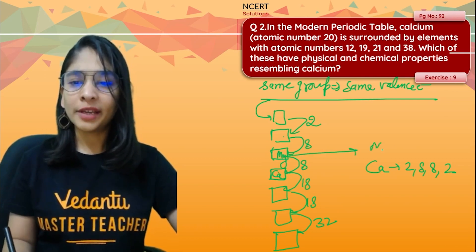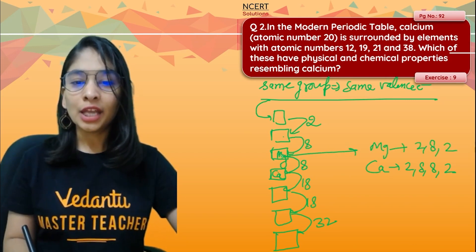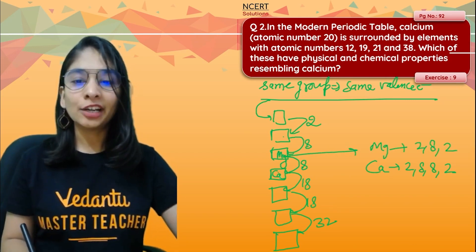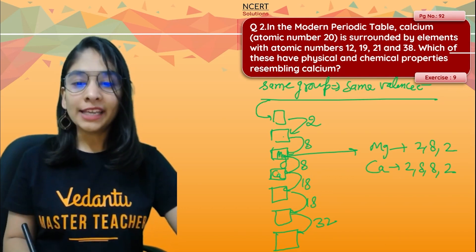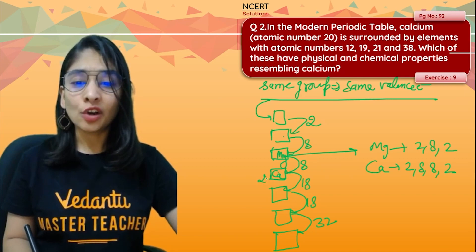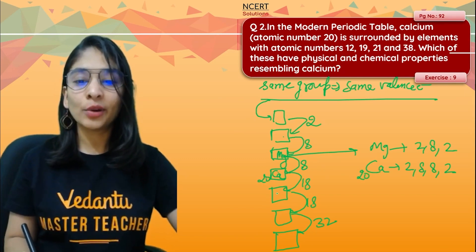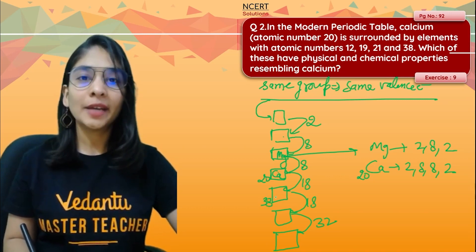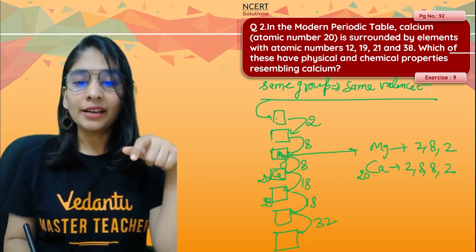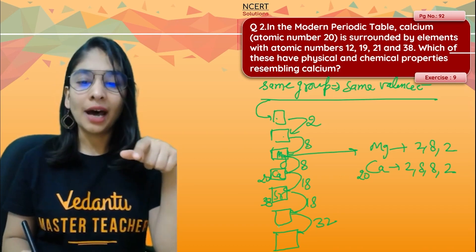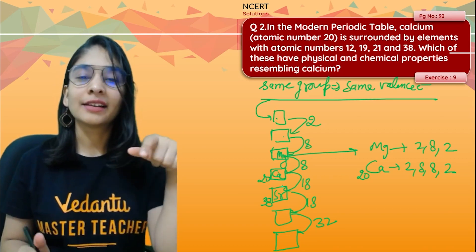Calcium has atomic number 20. Adding 18 to 20 gives 38 — that element is strontium. So the elements in the same group as calcium, going by the mnemonic Be, Mg, Ca, Sr — beryllium (4), magnesium (12), calcium (20), strontium (38) — all have the same valence electrons and therefore the same group.